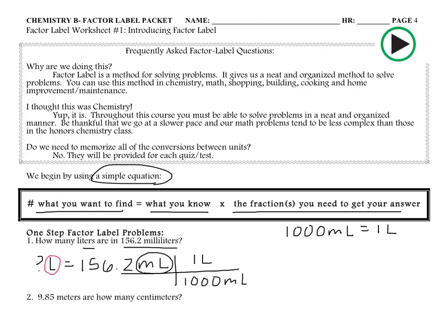Why put 1,000 milliliters on the bottom? It has to do with the units of milliliters, not the number 1,000. In this problem-solving technique, if you have the same units on the top of a picket fence as on the bottom, you can cancel them out — not the numbers, just the units. So when we cancel out milliliters, the only units left are liters, which are the units we want. That tells us it's time to stop and do math.